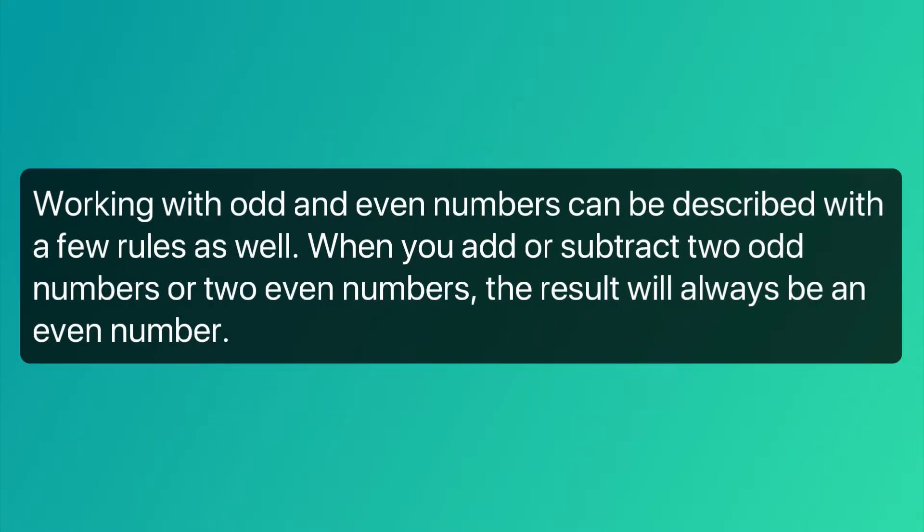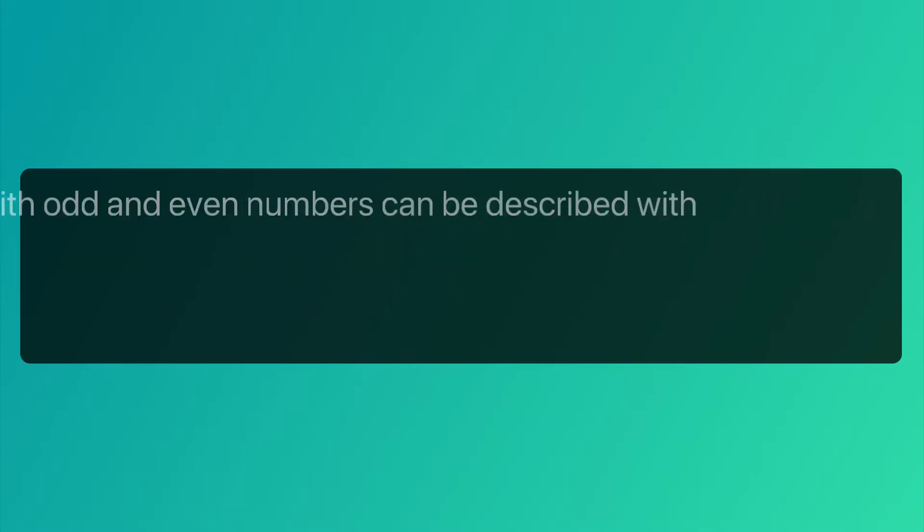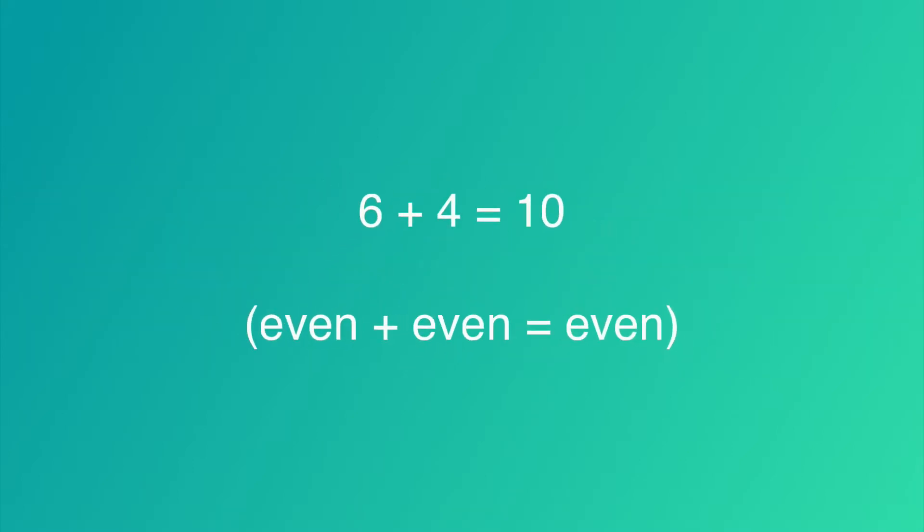Working with odd and even numbers can be described with a few rules as well. When you add or subtract two odd numbers or two even numbers, the result will always be an even number. For example, 6 plus 4 equals 10. That's an even plus an even, which equals an even. 7 minus 3 equals 4. Odd, odd equals even.